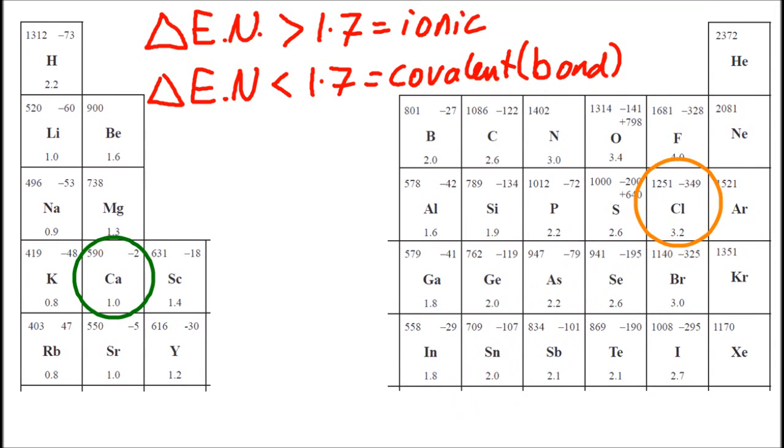So looking at calcium and chlorine, calcium chloride, the difference is 2.2, so that's big enough difference to be called ionic. Scandium sulfide, well, the difference there is 1.4 to 2.6. No, no. That difference is less than 1.7. So scandium sulfide is covalent. Even though it's a metal and a non-metal, it's still covalent.